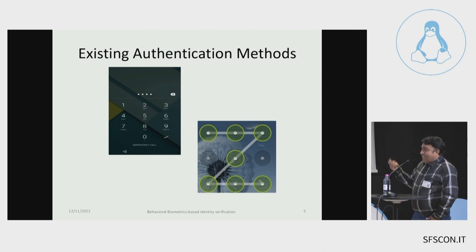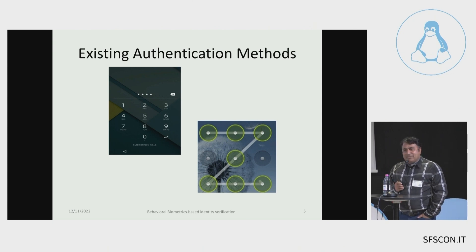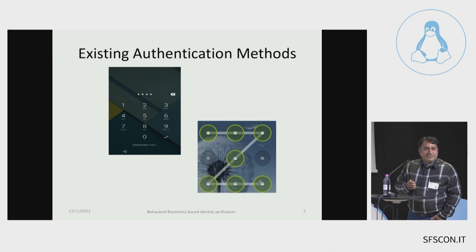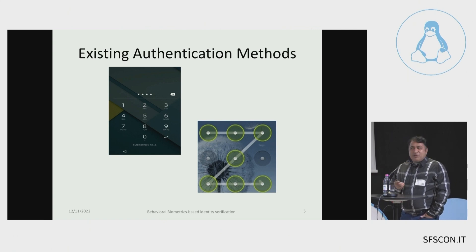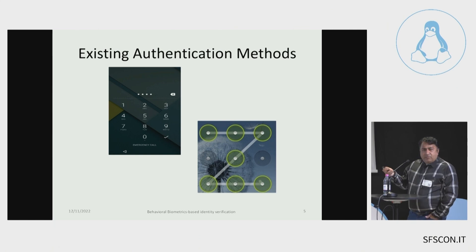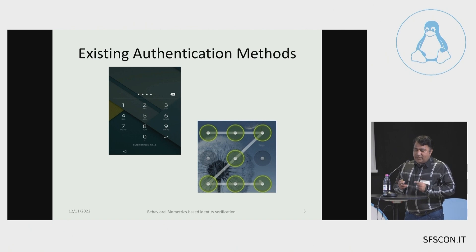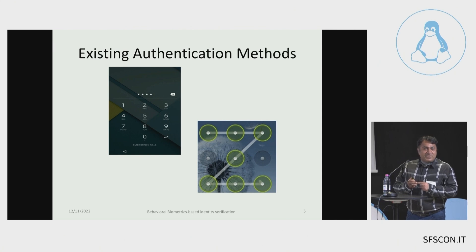Existing authentication mechanisms are knowledge-based, meaning you are required to memorize some secret — could be 1-2-3-4, could be a pattern. But you have to memorize this. Here is a trade-off: a complex password is difficult to remember, but an easier password is easy to attack. What are we supposed to do then?